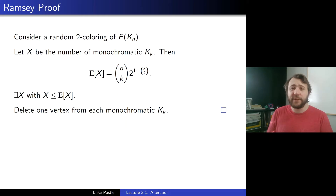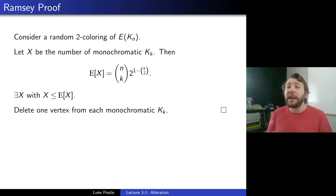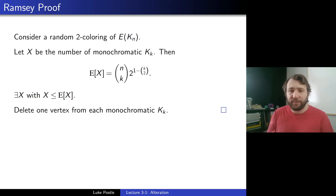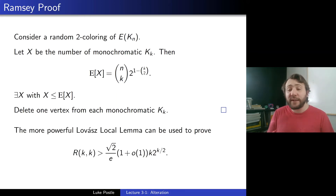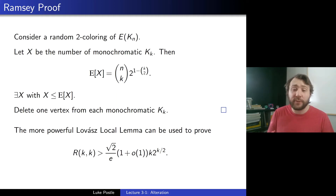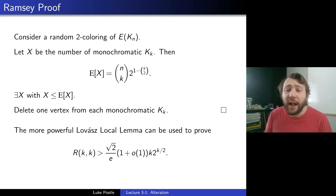That's the standard use of alteration: we had an outcome, we didn't union-bound to avoid all bad events, we noted the expected number and removed one from each bad event. Using the more powerful Lovász local lemma, which we'll see in chapter 5, one can prove that R(K,K) is actually greater than root 2 over E times (1 plus little-o(1)) times K times 2 to the K over 2 — another factor of root 2 improvement using an even more powerful probabilistic method.